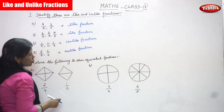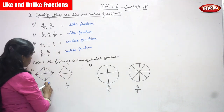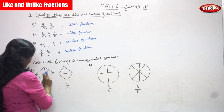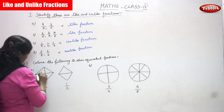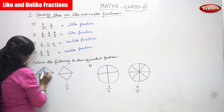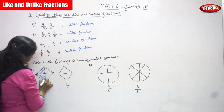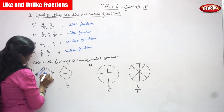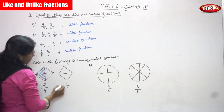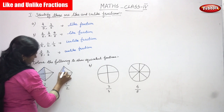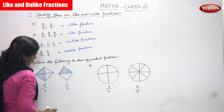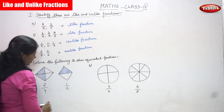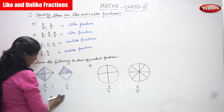Now next is: color the following to show the equivalent fraction. So 2 by 4 — you have to color 2 by 4. The whole part is 4, you have to shade only 2 portions. Now 1 by 2 — the shaded portion is only 1 and the whole part is 2. So 2 by 4 is equal to 1 by 2. Both are equivalent fractions.